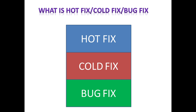A bug fix is when an issue is found during the development lifecycle and before the production stage. Always remember: hot fix and cold fix generally occur when your software is in the production stage, but a bug fix occurs during the development stage. For example, if there is a syntactical error or a logical error in the code, fixing that is nothing but a bug fix.